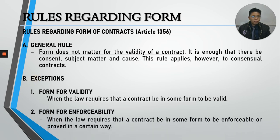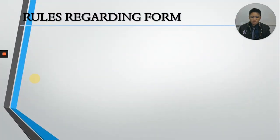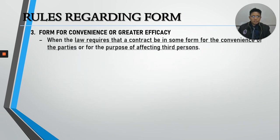Number two, form is required for enforceability — the law will require that a contract be in some form to be enforceable or to be proven in court. Number three, form is also necessary for convenience or greater efficacy — the law requires the contract be in some form for the convenience of the parties and for the purpose of affecting third persons. We will learn all of these one by one.